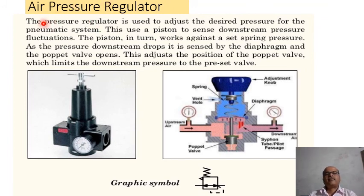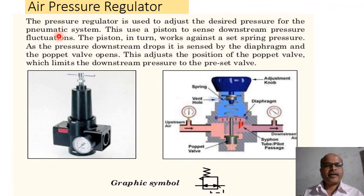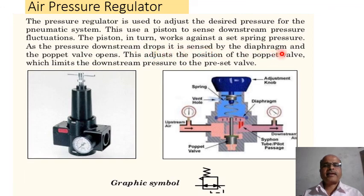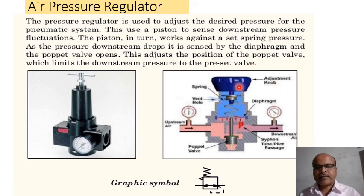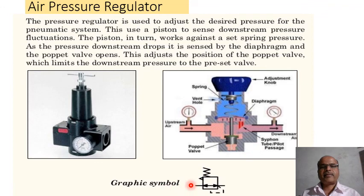The next component is the air pressure regulator. As the name indicates, it regulates the pressure of air. The pressure regulator is used to adjust the desired pressure in the pneumatic system. It uses a piston to sense downstream pressure fluctuations, working against a set spring pressure. As the pressure downstream drops, it is sensed by the diaphragm, which opens the puppet valve, limiting the downstream pressure to the preset value. The adjustment knob, spring, puppet valve, and pilot passage are shown in the diagram, along with the graphical symbol of the air pressure regulator.